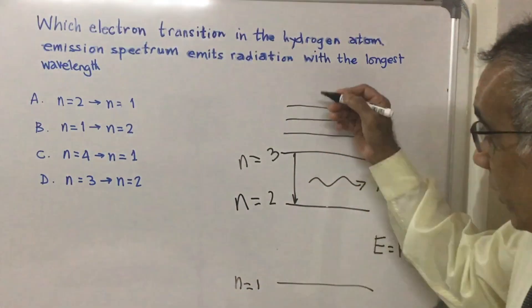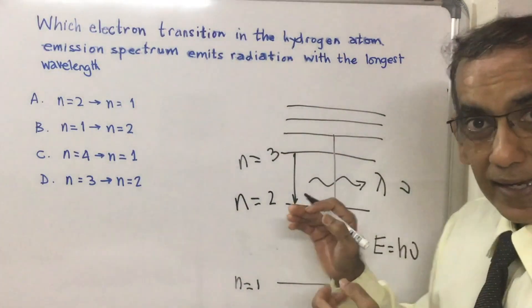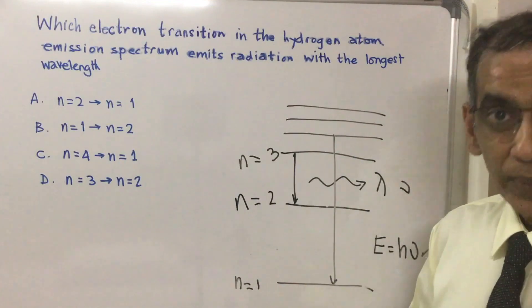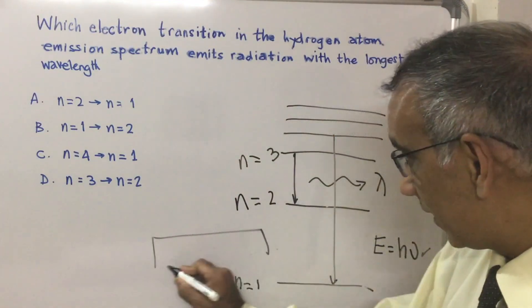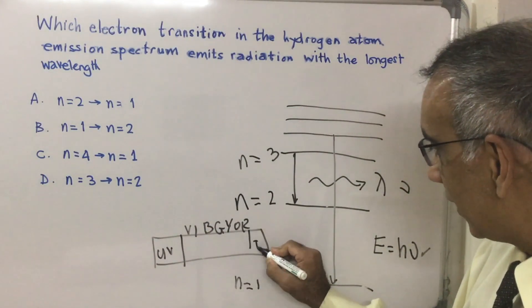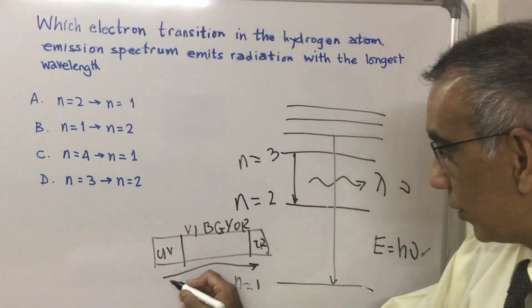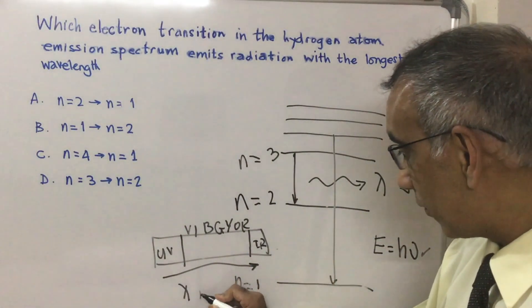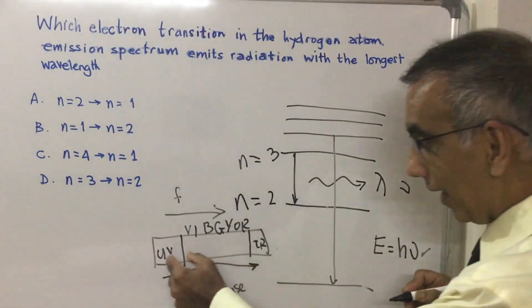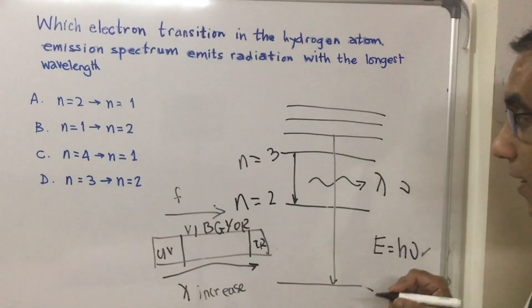Every time there's a transition from a higher level down to n=1, the energy gap is so much bigger that the frequency is in a part of the electromagnetic spectrum beyond violet — it's in the ultraviolet. You should know, as required in topic 2 of the IB chemistry guide, that as you move toward infrared, wavelengths increase and frequency decreases, while the ultraviolet region has higher frequencies and higher energy.